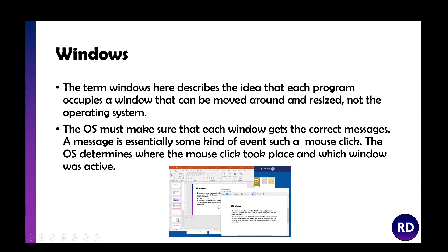If I clicked on PowerPoint, it would bring that to the front, put this to the back, and all my commands would go to that window. If you haven't clicked on any window, commands may go to the operating system or desktop — for example, pressing Alt+F4 on the taskbar would try to shut down the computer rather than close the current window. So the operating system has to keep track of what's active and what's not.